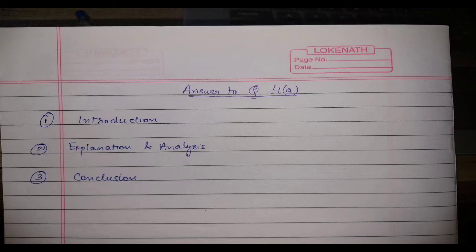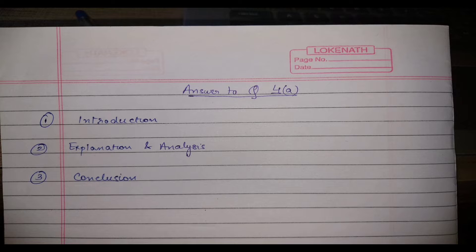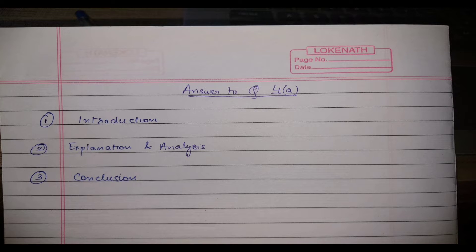The first and foremost thing is every answer should begin with a fresh page. In the middle of the page, you have to write the answer to question number — whatever you are attempting, say 4a in this example. Then in the second stage, you have to break your answers into three parts: introduction, explanation and analysis, and conclusion.